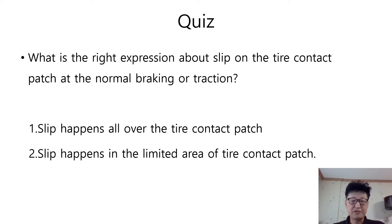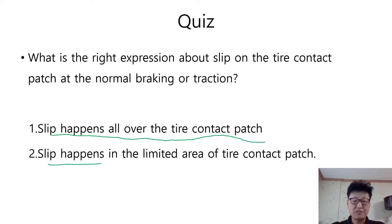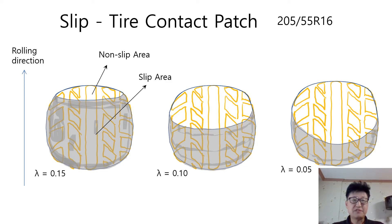As usual, I prepared a quiz for you. What is the right expression about the slip on the tire contact patch at normal braking or traction? Number one: slip happens all over the tire contact patch. Number two: slip happens in the limited area of the tire contact patch. Slip doesn't mean slip happens all over the area of the tire contact patch when the wheel moment is applied at the wheel center. Tire contact patch has different shapes according to various slip ratios.